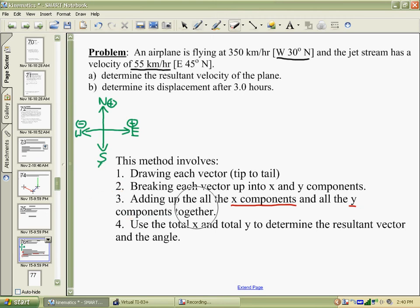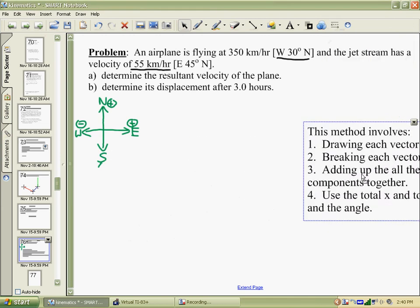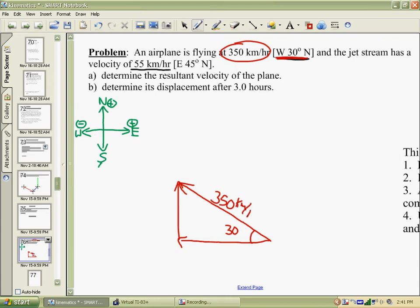We'll start by drawing. Step one says to draw the vectors. I need to draw west 30 north with a length of roughly 350 kilometers per hour. We're not going to draw it to scale. To draw west 30 north, I start in the western direction and then I go north. So if I've drawn that correctly, then from start to finish, an angle of 30 degrees, this would be 350 kilometers per hour, and that will be V1.